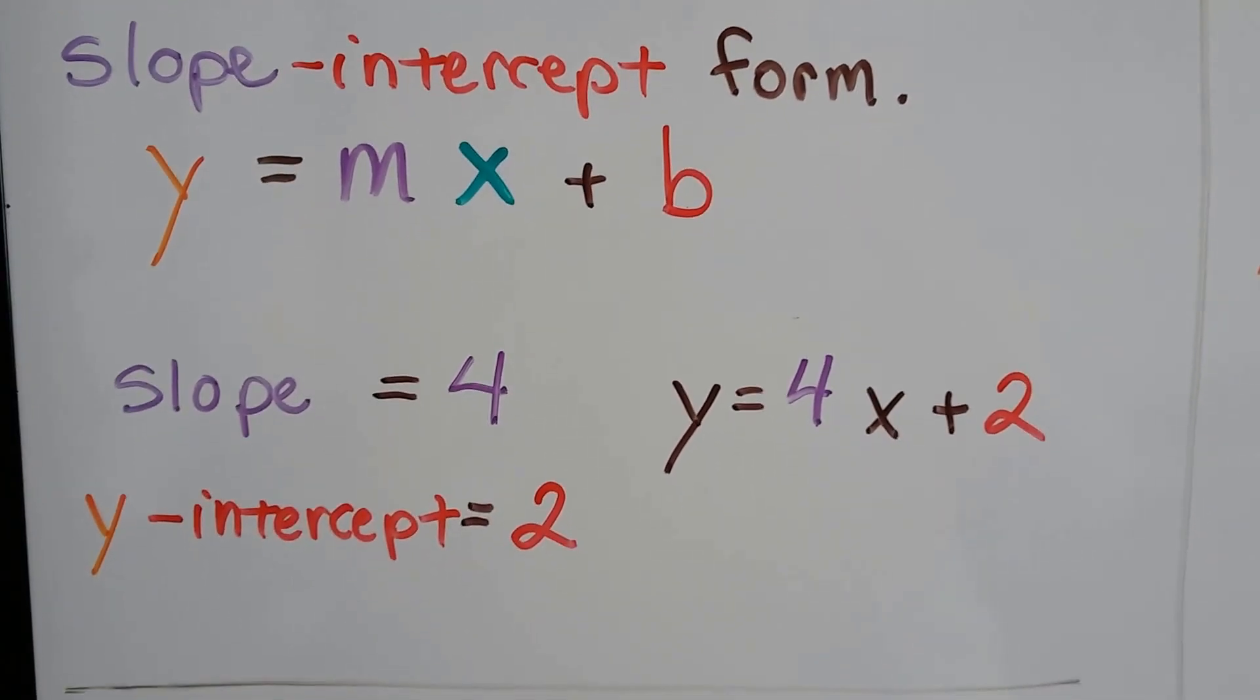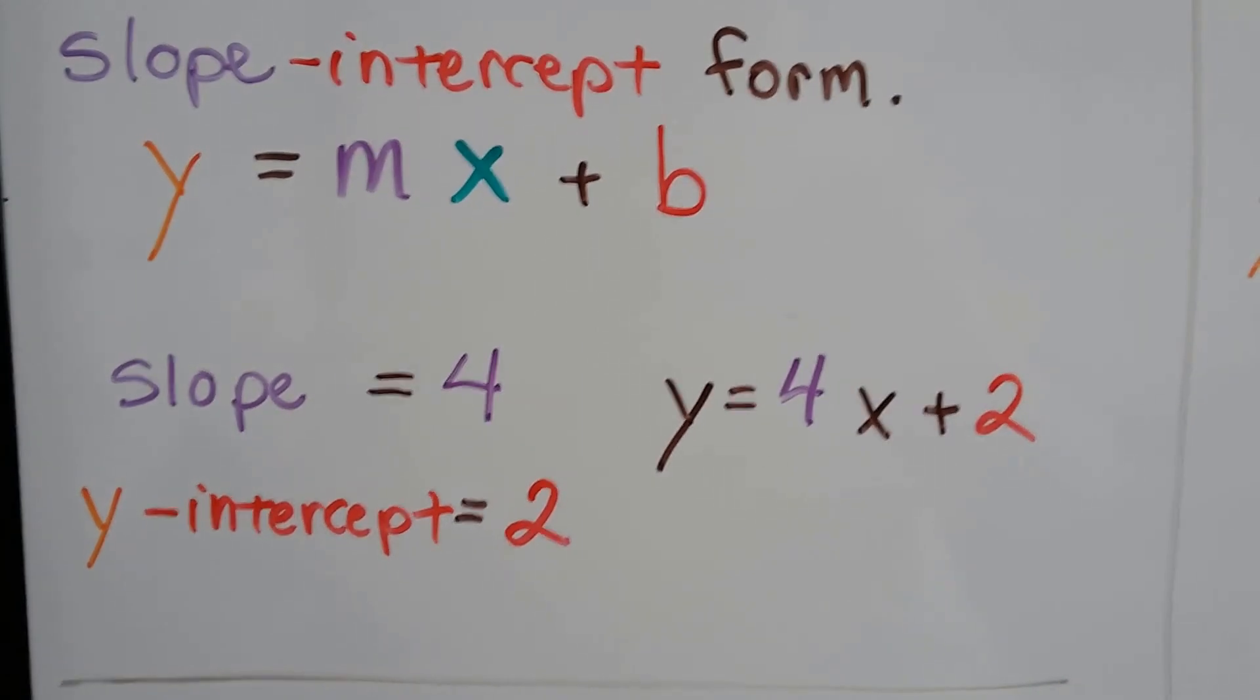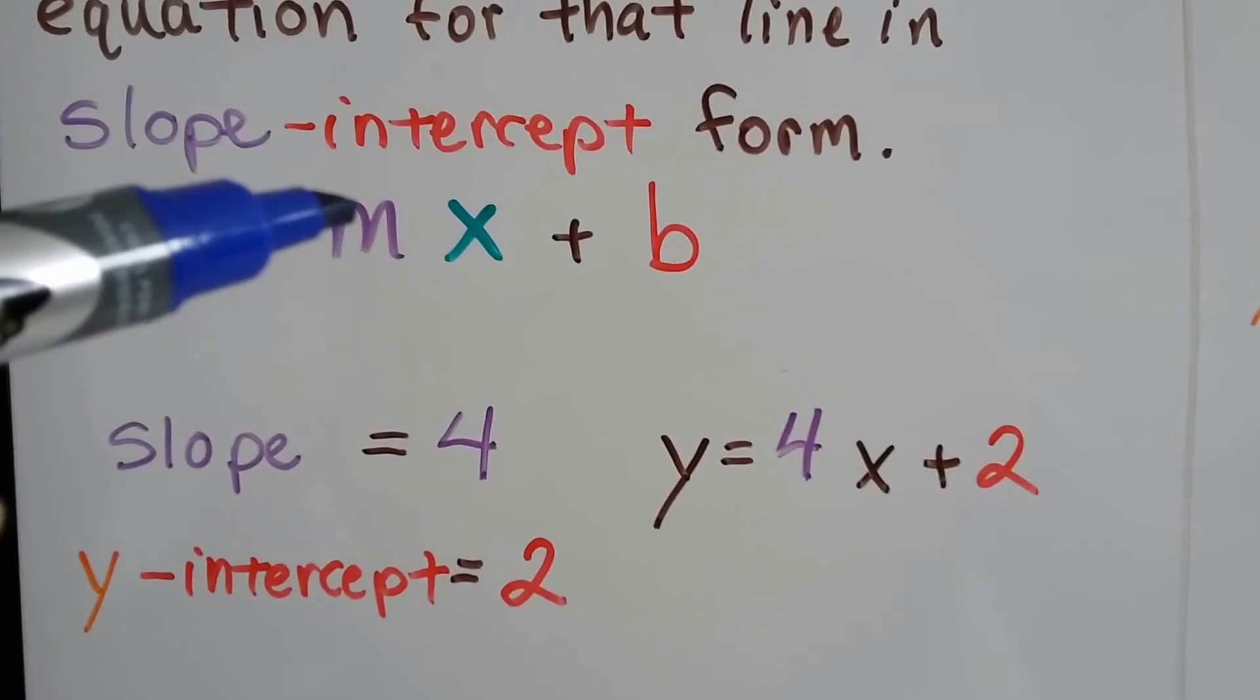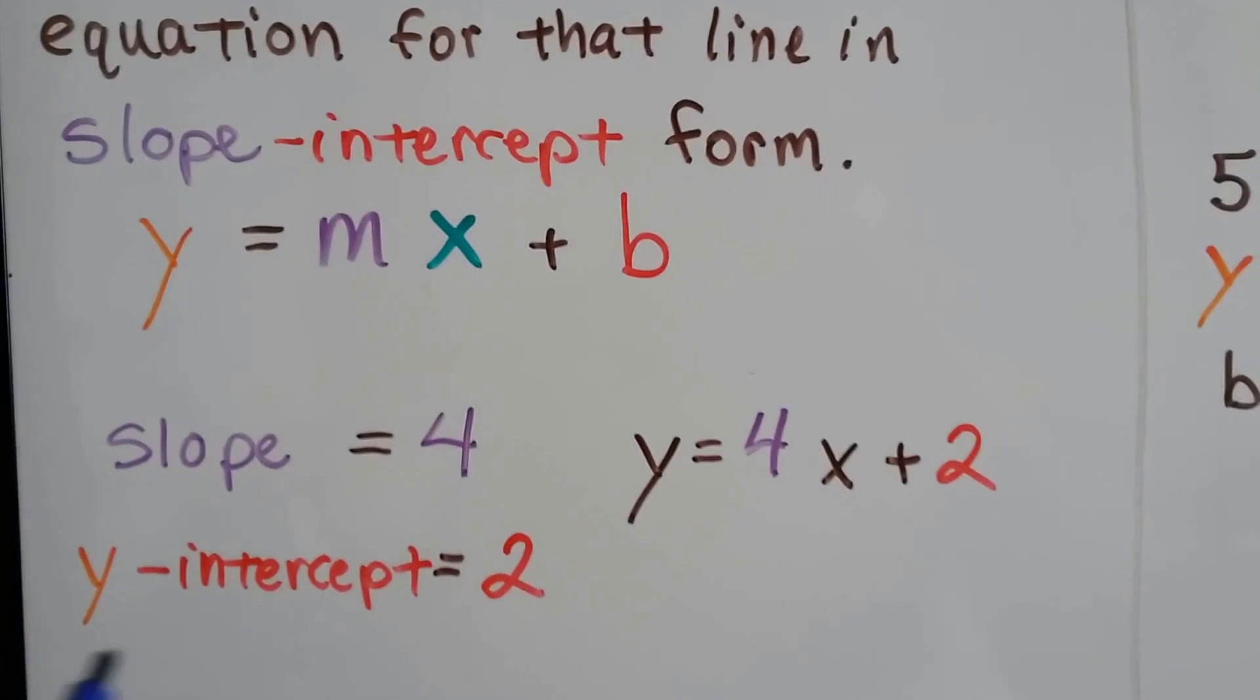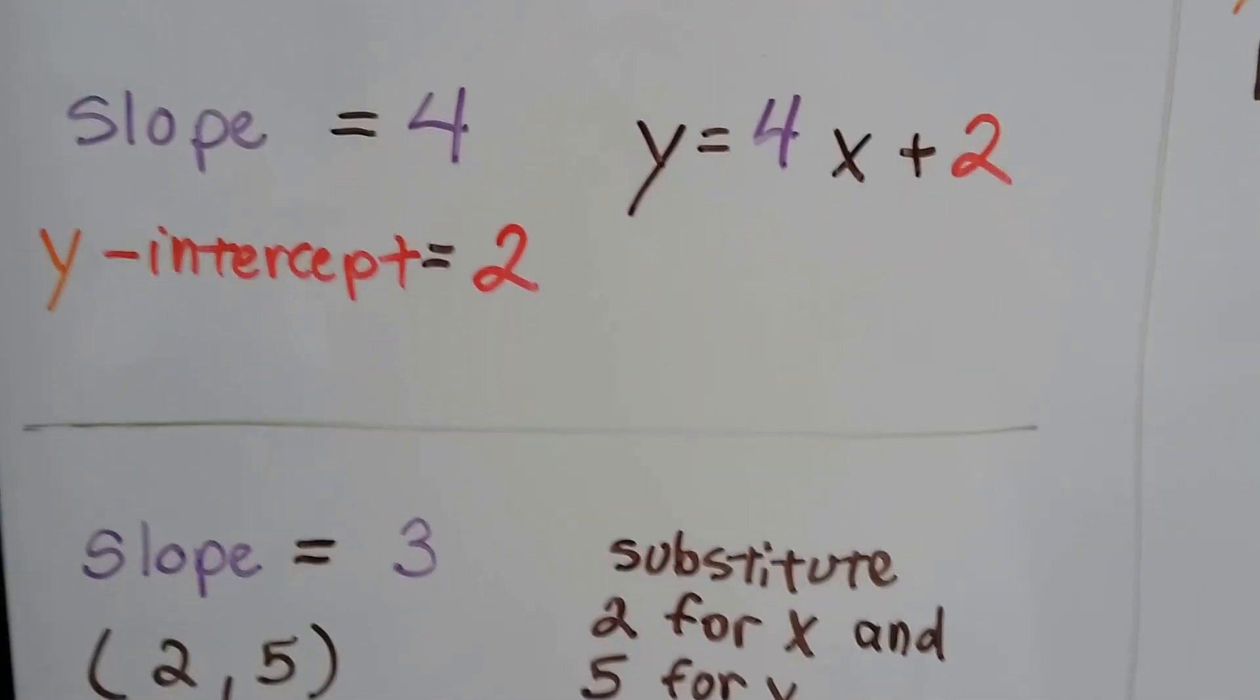So if the slope is 4 and the y-intercept is 2, we just plug those in for the equation. We get y equals 4, because we know that m is the slope, so y equals 4x plus 2, because the b is the y-intercept. That was easy.